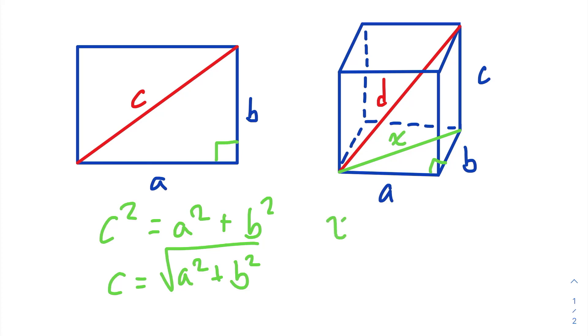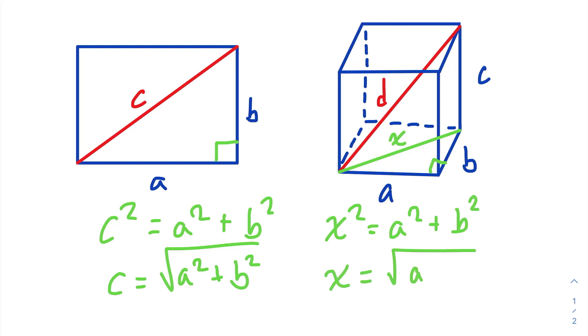X squared is equal to A squared plus B squared. So X is equal to the square root of A squared plus B squared.